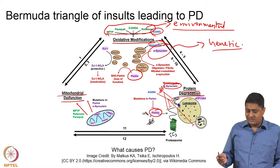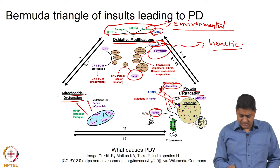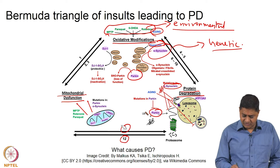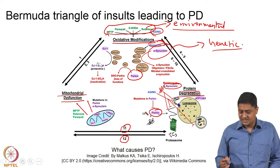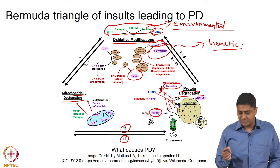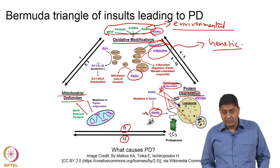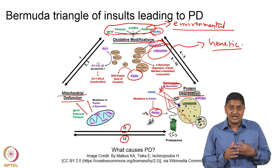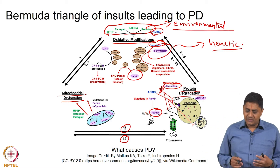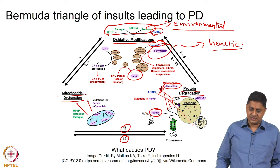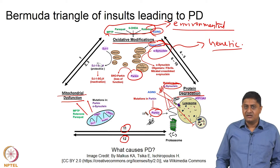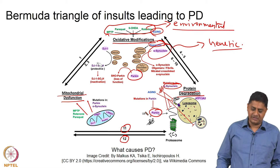There is an interaction between these particular causes; together they cause the outcome which is the disease or the pathology. Some of these things are very well understood — each refers to a specific phenomenon that has been relatively well understood. However, the interaction between these and what the exact details are still remain to be understood. There is still a lot of scope for improvement of our understanding of this disorder.